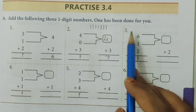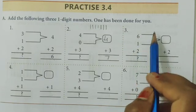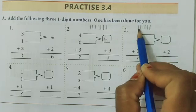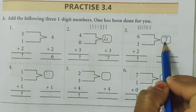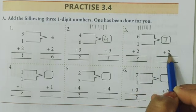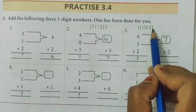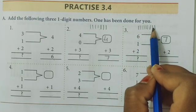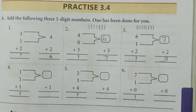Next example: first add the first two numbers — 6+1=7. Count: 1, 2, 3, 4, 5, 6, then add 1 more to get 7. Write 7 in the box. Then add the third number: 7+2. Count all lines: 1, 2, 3, 4, 5, 6, 7, 8, 9. Therefore 7+2=9. You can also use your fingers to count — 7 numbers plus 2 more gives 9.